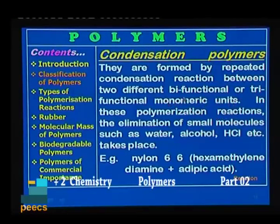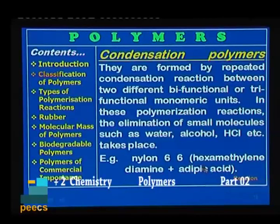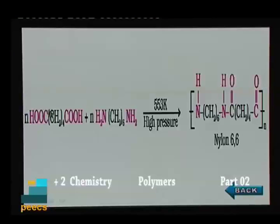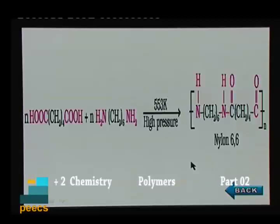Next is condensation polymers. They are formed by repeated condensation reactions between two different bifunctional or trifunctional monomeric units. In these polymerization reactions, the elimination of small molecules such as water, alcohol, or HCl takes place. Example is nylon 6,6, formed by the reaction between hexamethylene diamine and adipic acid (hexane-1,6-dioic acid) at high pressure and 553 Kelvin.